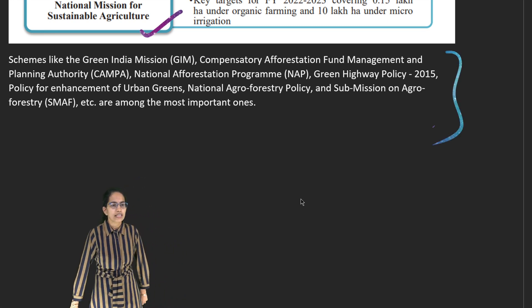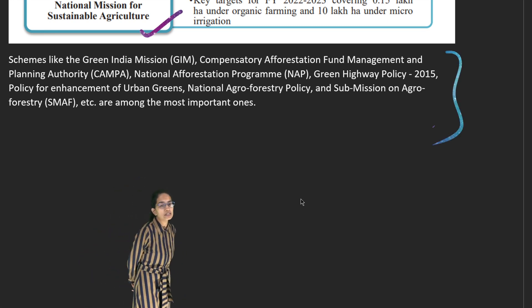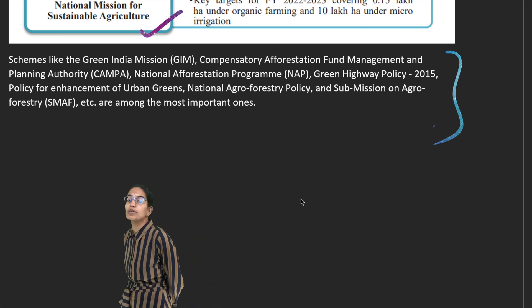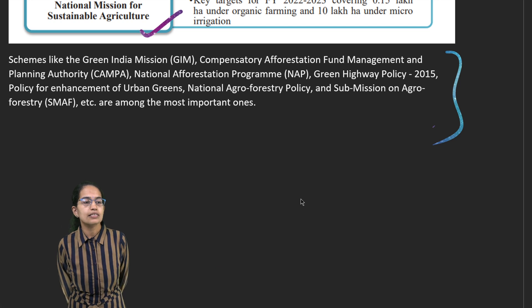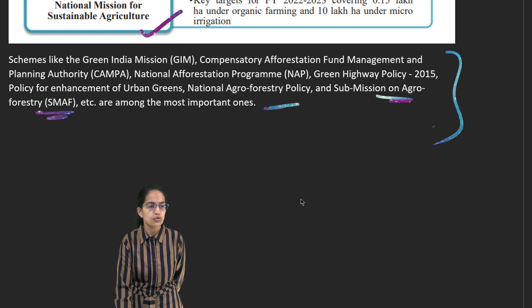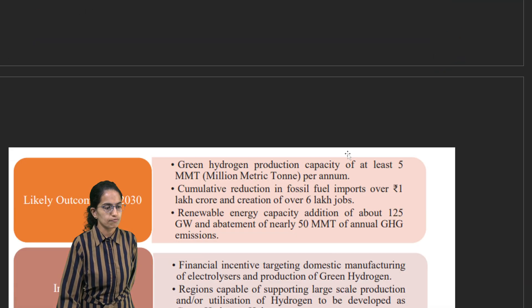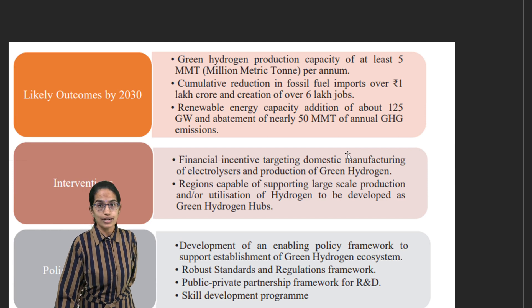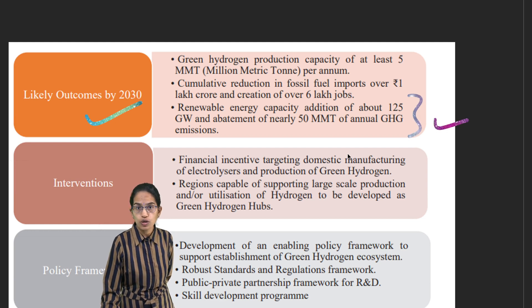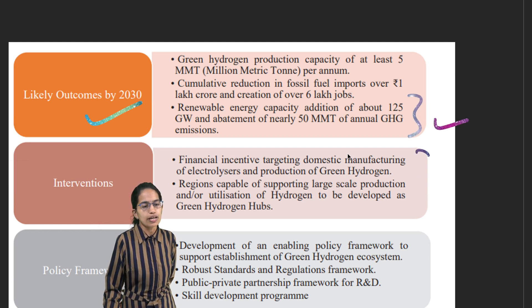India focuses on the Green India Mission through compensatory agroforestry fund management, the afforestation program, green highway program, urban greens, and the National Agroforestry Policy. Green hydrogen as a source of energy will see significant outcomes by 2030, with major additions to renewable energy capacity. Financial incentives, ecosystem establishment, and skill development programs have been put in place for green hydrogen development.